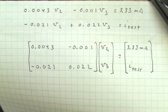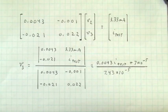If we express that in matrix form, we can use Kramer's rule to solve for V sub three. Solving for V3 then by Kramer's rule using the ratio of these two determinants, we get an expression for V3 related to a constant plus another constant times I test.